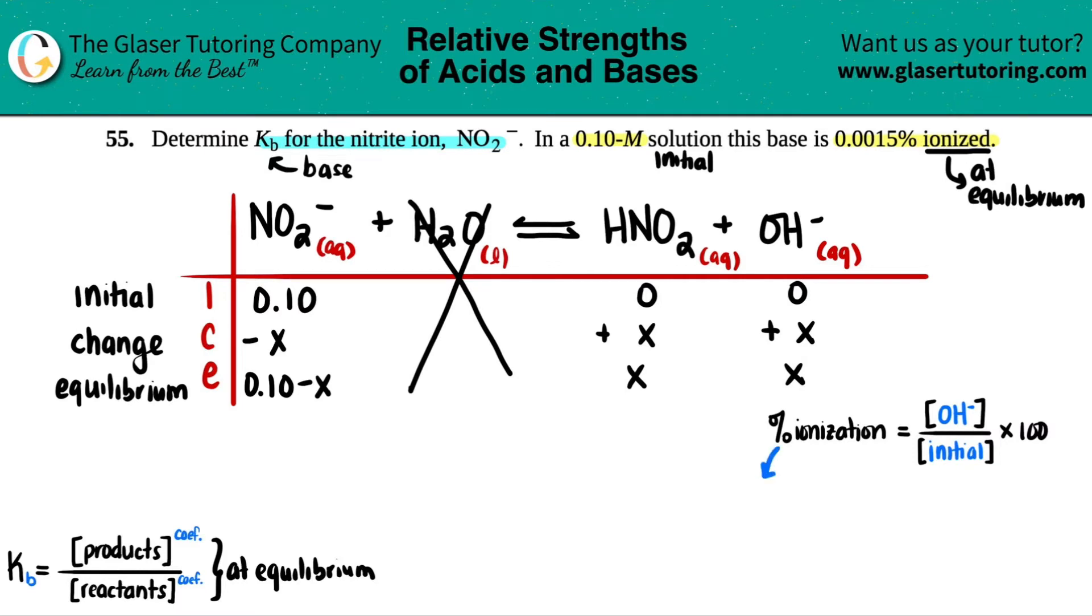Now let's tie in this percent ionization. Whenever they give you a percent ionization, in this case 0.0015%, we think of one formula. Your percent ionization, if you're working with a base, is the concentration of OH minus divided by your initial times 100. They told us that the percent was 0.0015. We do know the initial concentration was 0.1 times 100. So we can actually solve for what the OH minus concentration is. Ionization is always at equilibrium, so I can find out what that X is.